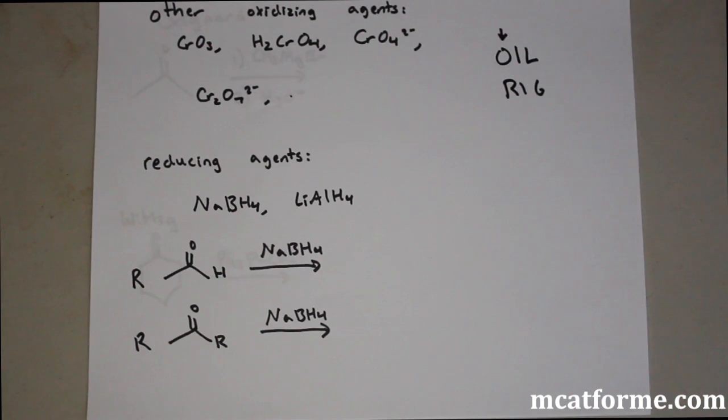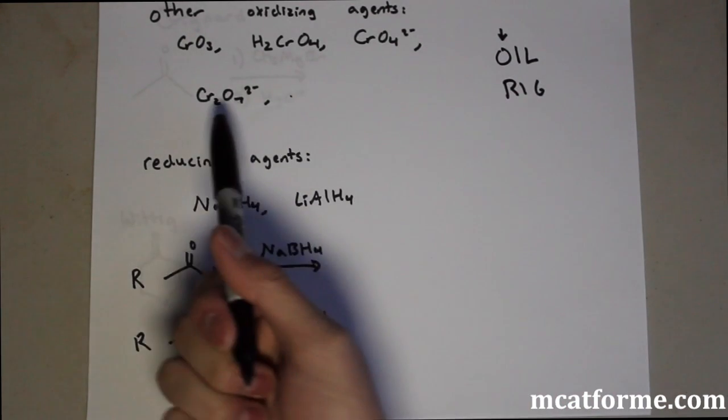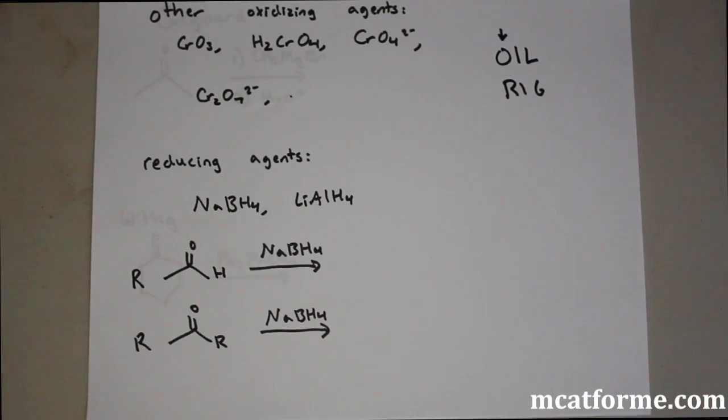In the previous example we saw that two hydrogens were extracted - they were lost - and that's why that's an oxidation. These are all oxidizing agents. Some common examples are these ones right here - anything with Cr. I like generalizations for the MCAT so we don't have to memorize as much.